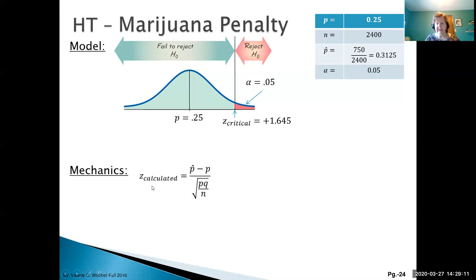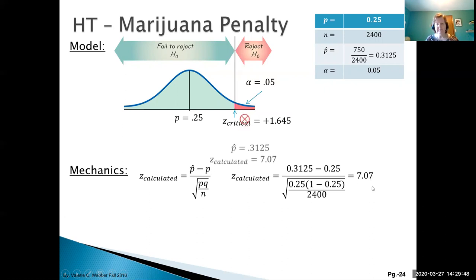Remember our Z calculated for our test statistic: P hat minus P divided by the standard error. Plugging in the values: 0.3125 was our sample proportion, 0.25 is our population proportion, and here's the spread of our model. Notice the spread includes the population proportion. Don't make that common error—don't put the sample proportion down here.